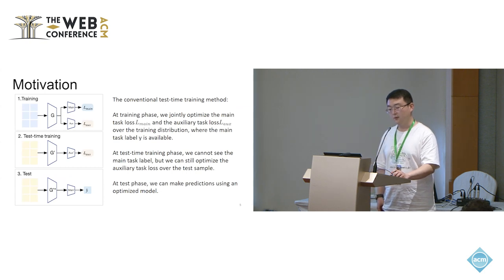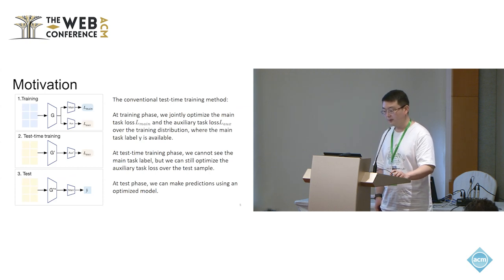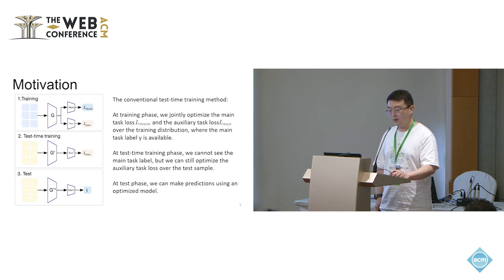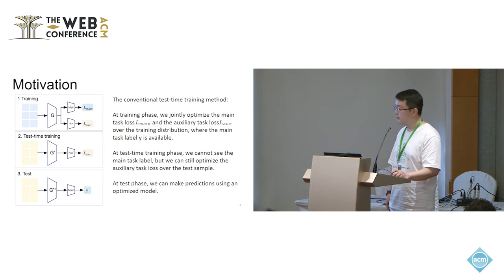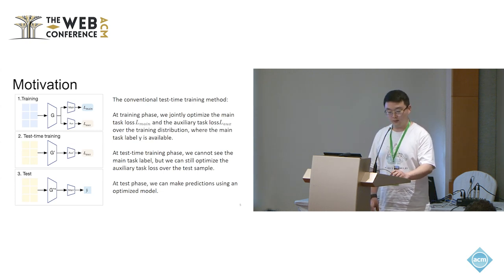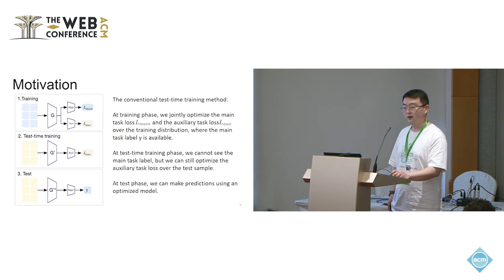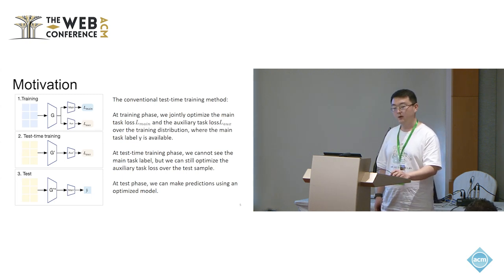The test time training emerges as a solution to bridge the distribution gap between the source and target domain. Through our slides, the blue data are the features from the source domain and the yellow data from the target domain. The test time training introduces an auxiliary task within the training and test, aiming to learn the semantics from the target domain sample and improving the trained model. In our slides, g denotes the shared layer between the main task and the auxiliary task, main is the remaining layer of the main task, and aux is the remaining layer of the auxiliary task. Given the distinctive characteristic displayed by individual samples in the target domain, test time training shows promising performance in improving the model generalization.